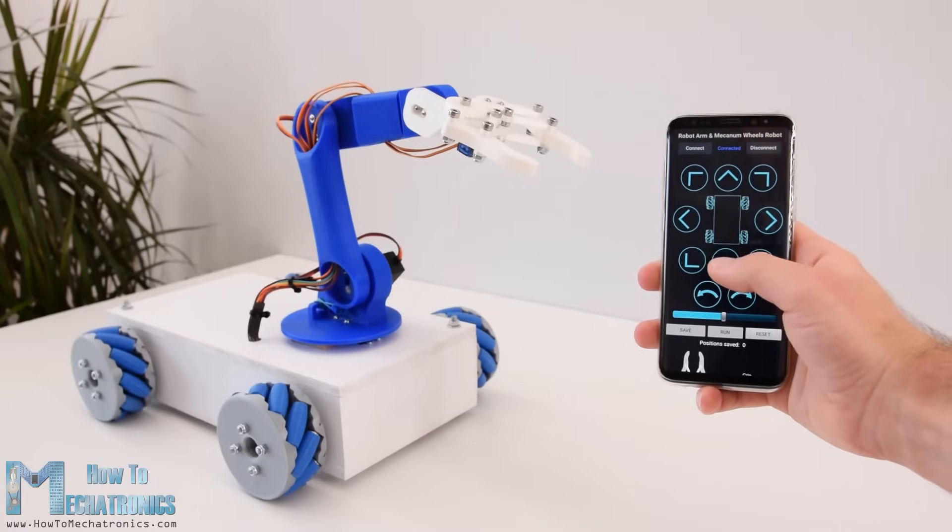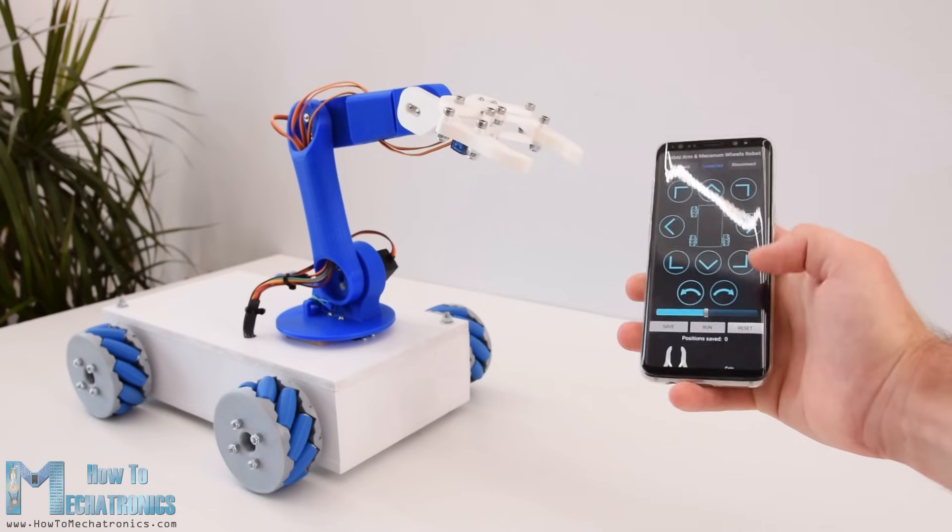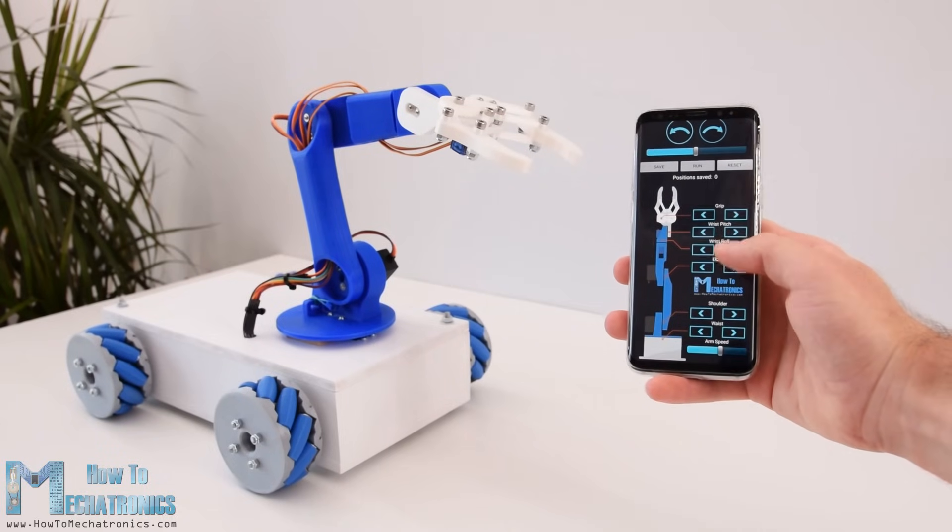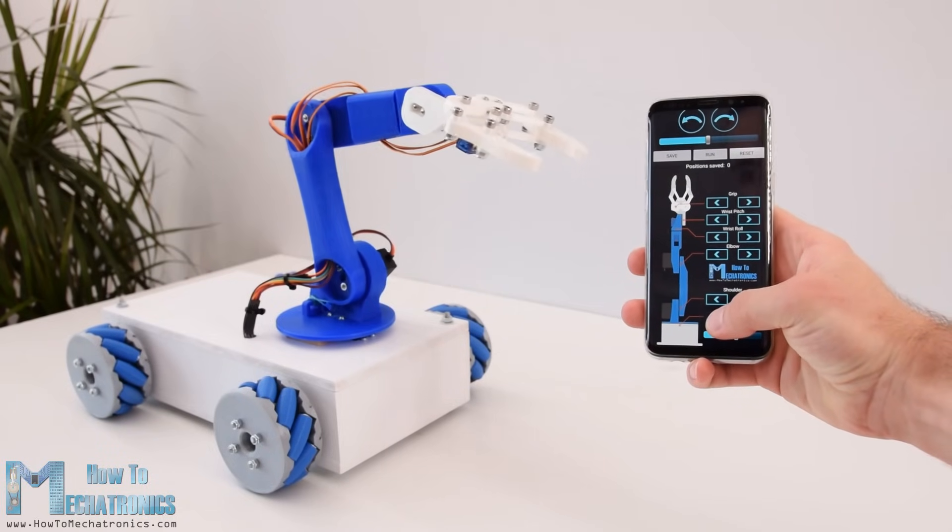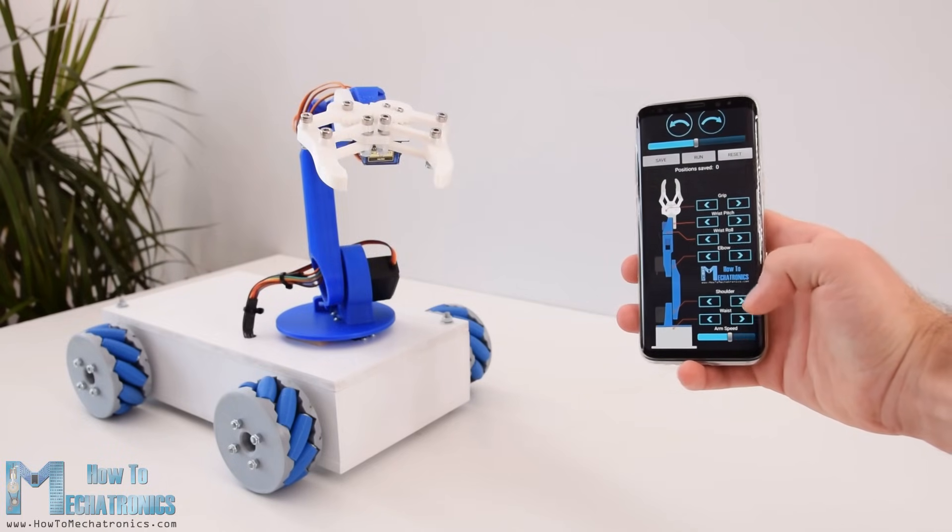So we can control the Mecanum Wheels robot with the custom built Android application the same way as explained in the previous video. In addition to that, now the app also has buttons for controlling the robot arm.